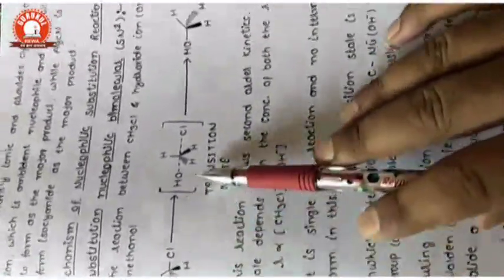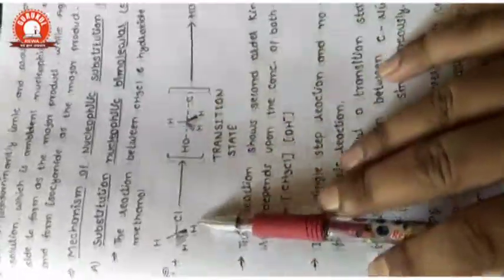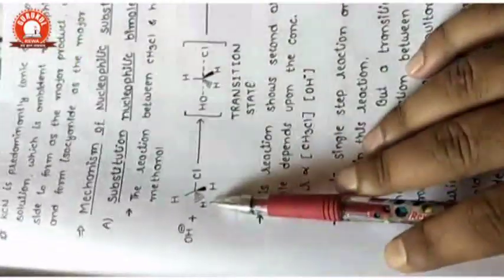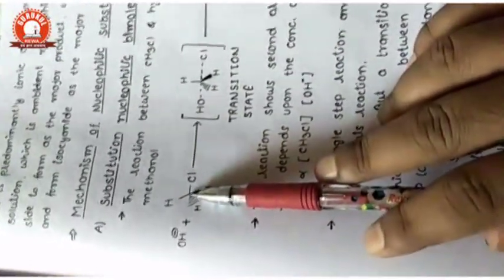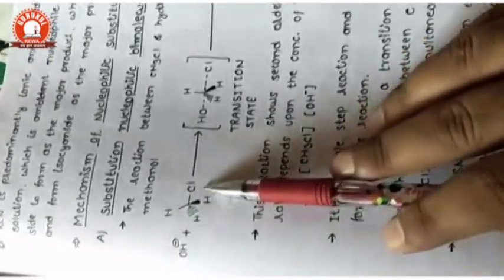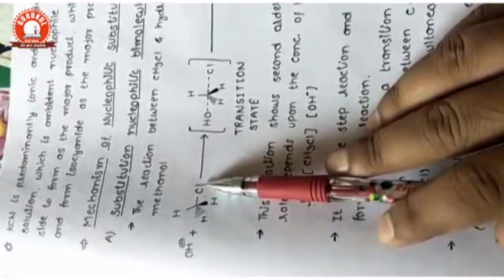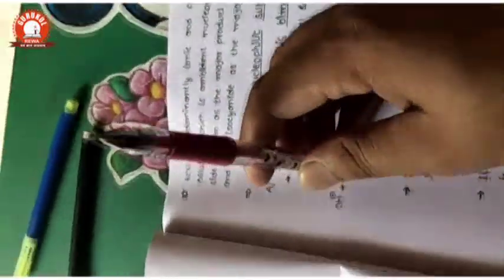SN2 is a single-step reaction. It has an intermediate but is completed in one reaction. The reactant is CH3Cl — carbon at the center with three hydrogens and one chlorine. The dark shading represents hydrogen just above the plane.